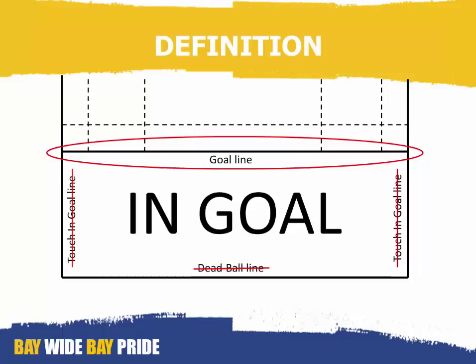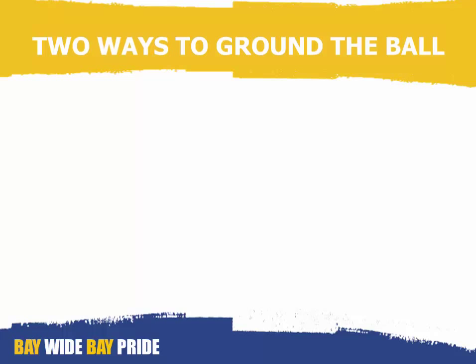In goal is the part of the ground where the ball may be grounded by players from either team. When attacking players are first to ground the ball in the opponent's in goal, the attacking players score a try. When defending players are first to ground the ball in in goal, the defending players make a touchdown.